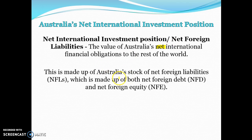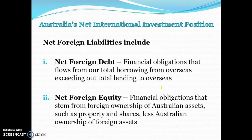Net foreign liabilities is made up of both net foreign debt and net foreign equity. Net foreign debt is our financial obligations to the rest of the world from borrowing minus lending — net always means borrowing minus lending. Net foreign equity is our financial obligations stemming from foreign ownership of Australian assets like property and shares, minus Australia's ownership of foreign assets.